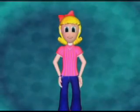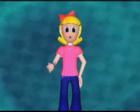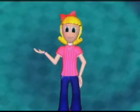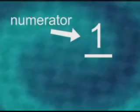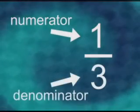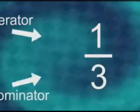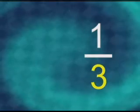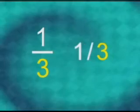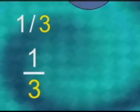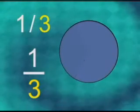A fraction is a way of writing the part or parts of a thing or set. All fractions have a numerator and a denominator. The denominator is the number written under the bar or after the slanted line. The denominator tells you how many equal parts the thing or set is divided into.